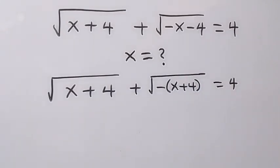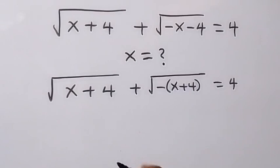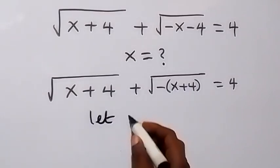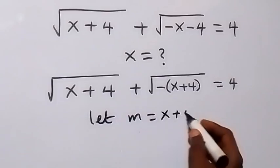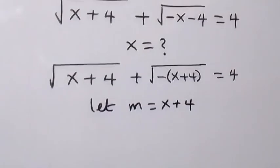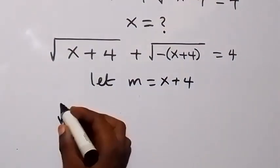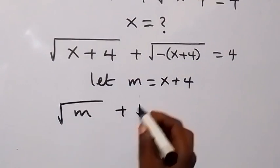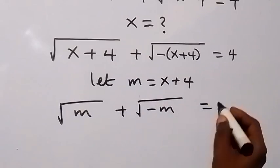In the next step, let's take (x+4), which is common, and represent it with a letter. Let m = x+4. We can now rewrite the equation in terms of m: √m + √(-m) = 4.